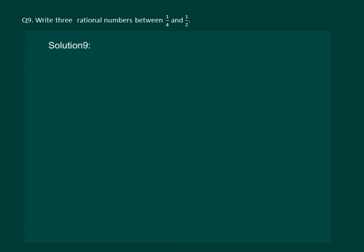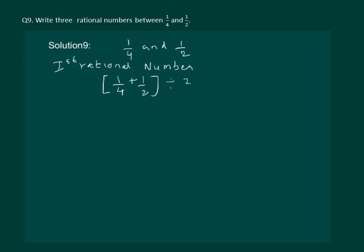Find 3 rational numbers between 1 by 4 and 1 by 2. To find the first rational number, we find the mean of 1 by 4 and 1 by 2: that gives us 3 by 4 divided by 2, multiplied by 1 by 2, which is equal to 3 by 8. So 3 by 8 is the first number which lies between 1 by 4 and 1 by 2.